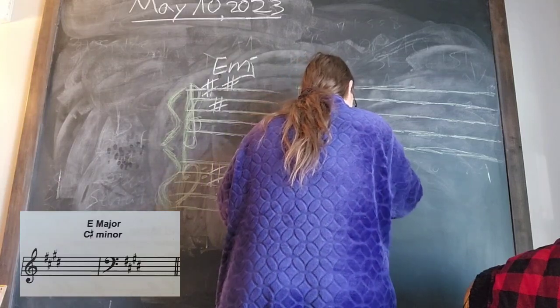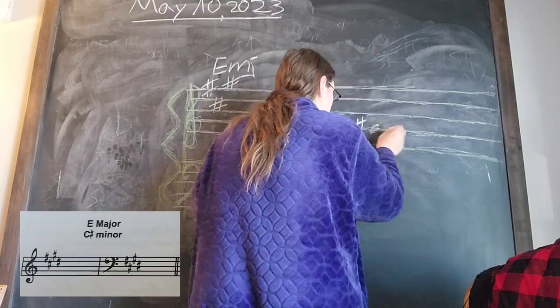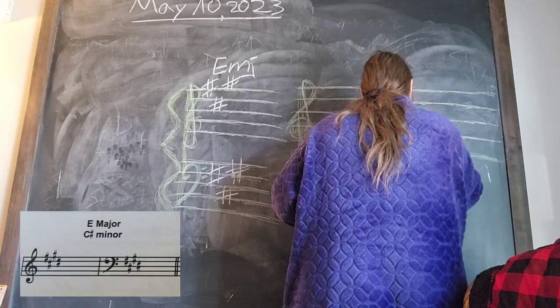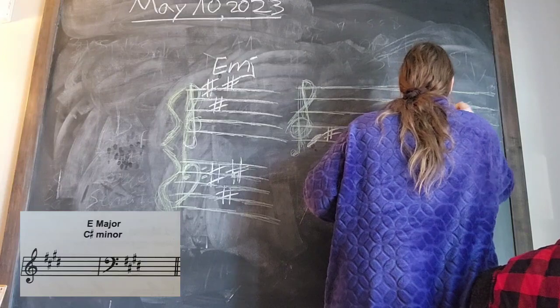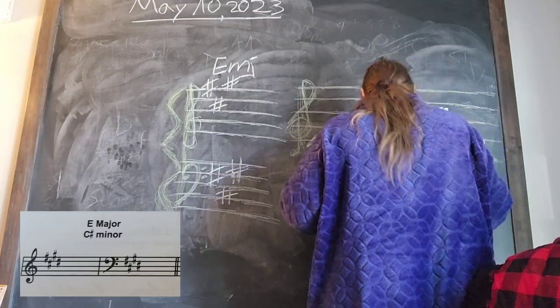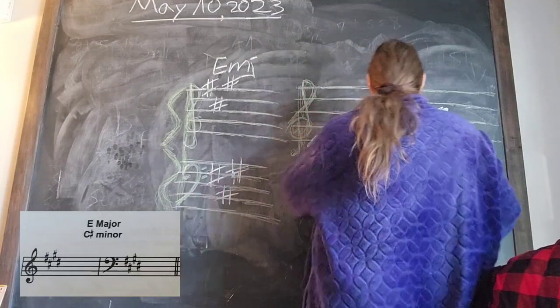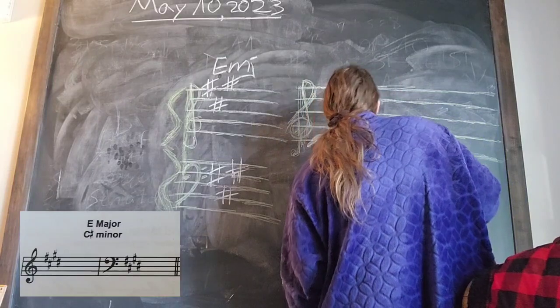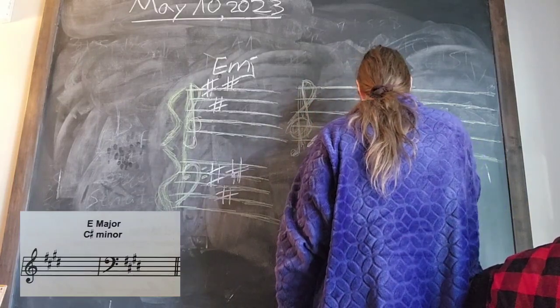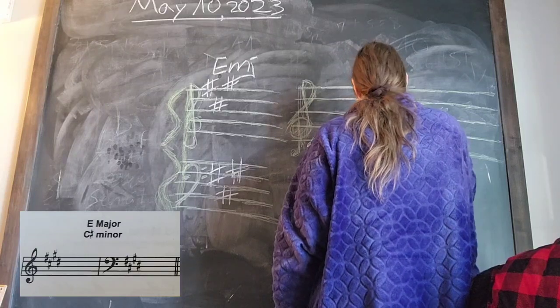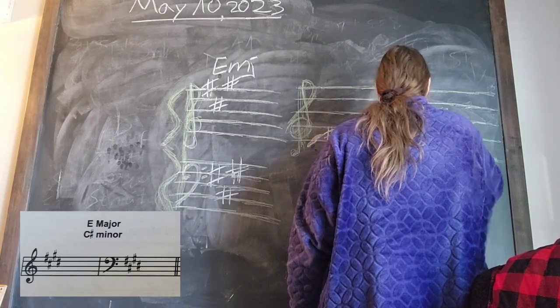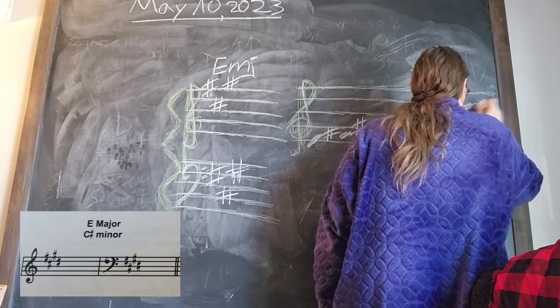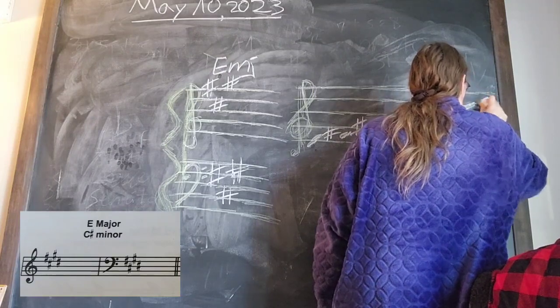We have an E, F sharp, G sharp, and an A. Wait, I think I messed up. I wrote a B sharp, that is a note but we're not using it. Okay, so we got G sharp and an A and a B and a C sharp and a D, and the last note we have is an E.